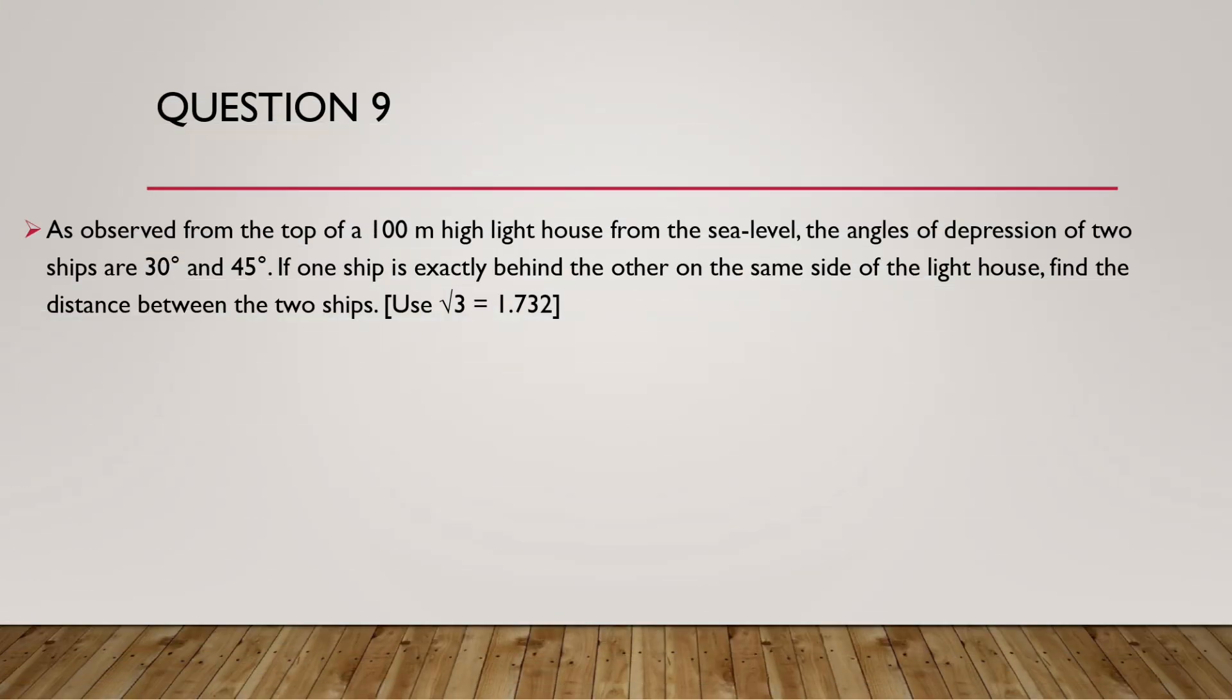Question 9. As observed from the top of a 100 meter high lighthouse from sea level, the angles of depression of two ships are 30 degrees and 45 degrees. If one ship is exactly behind the other on the same side of the lighthouse, find the distance between the two ships. Use root 3 equals 1.732.